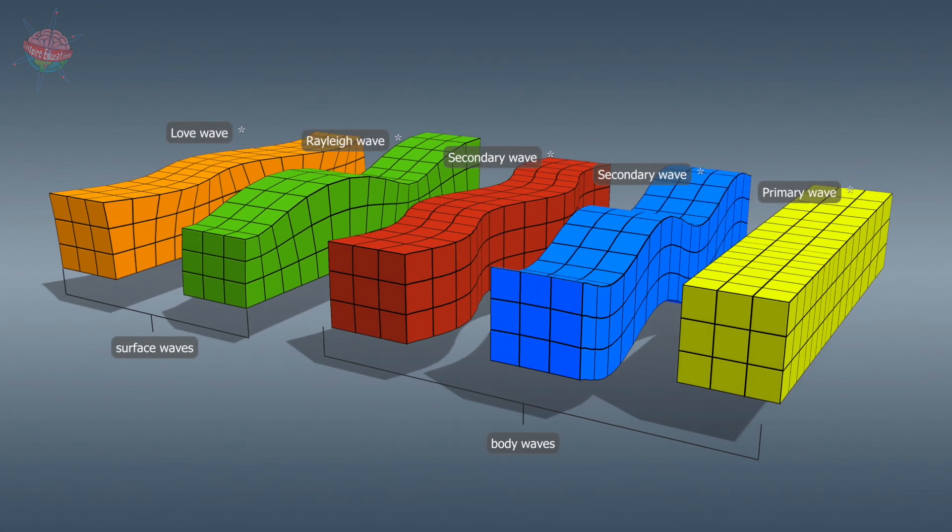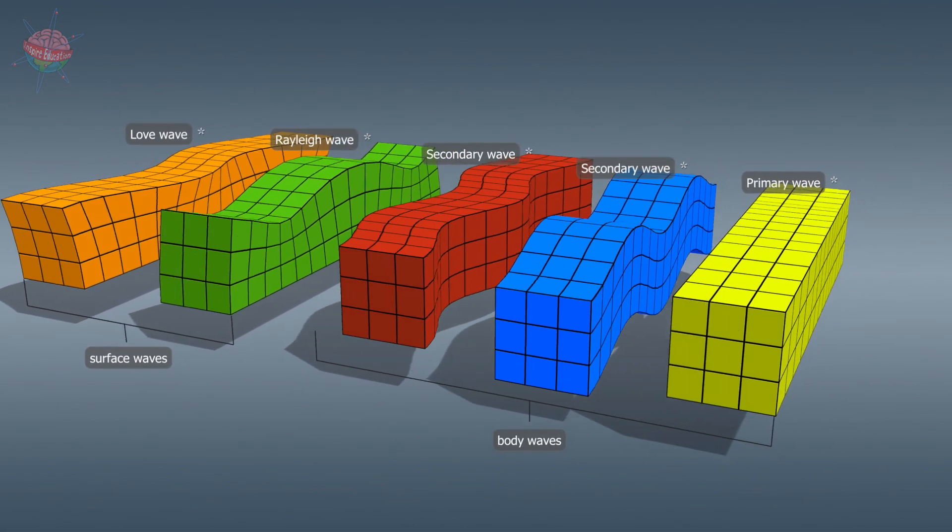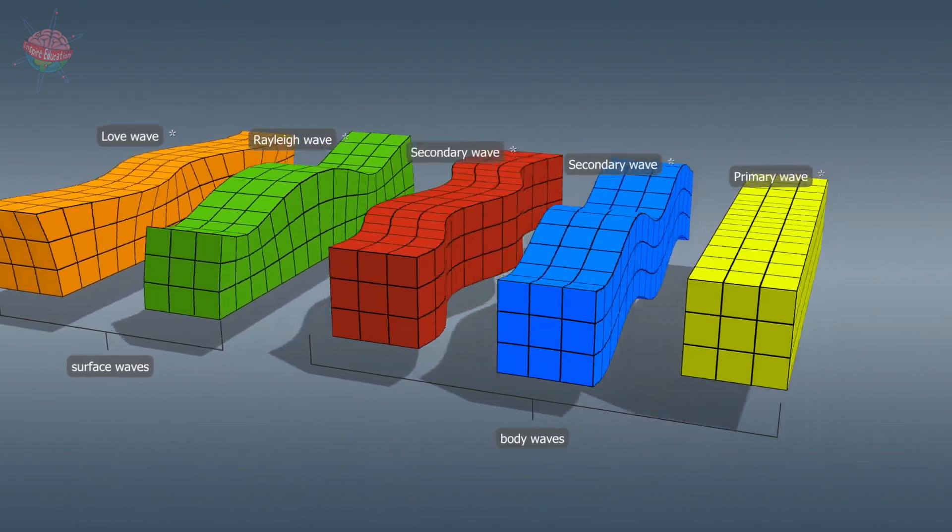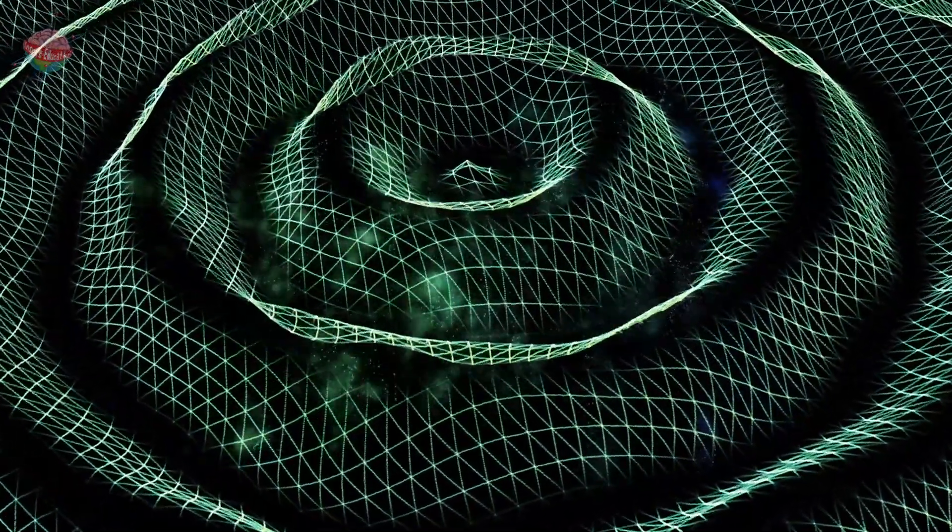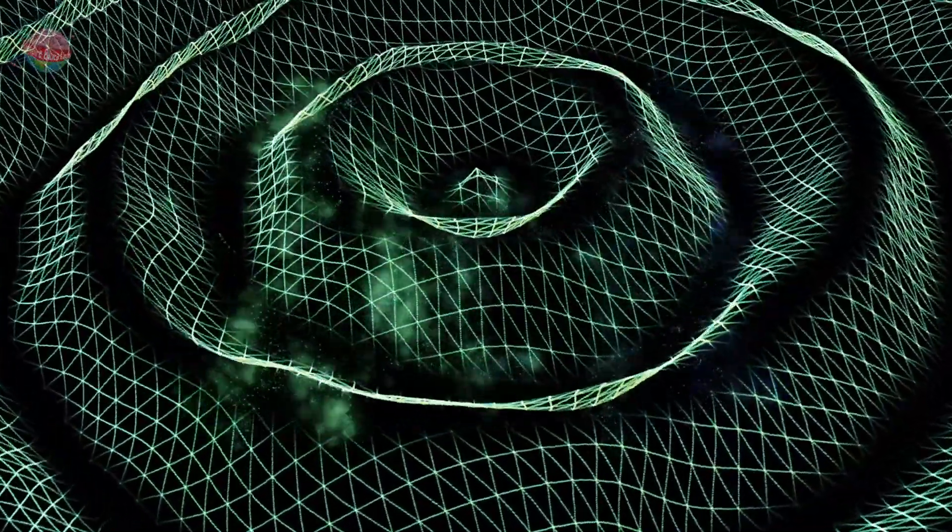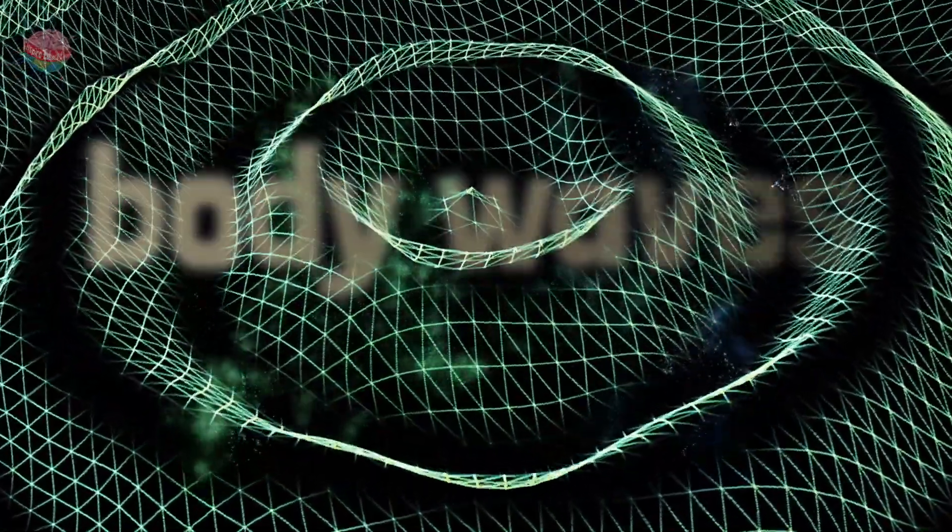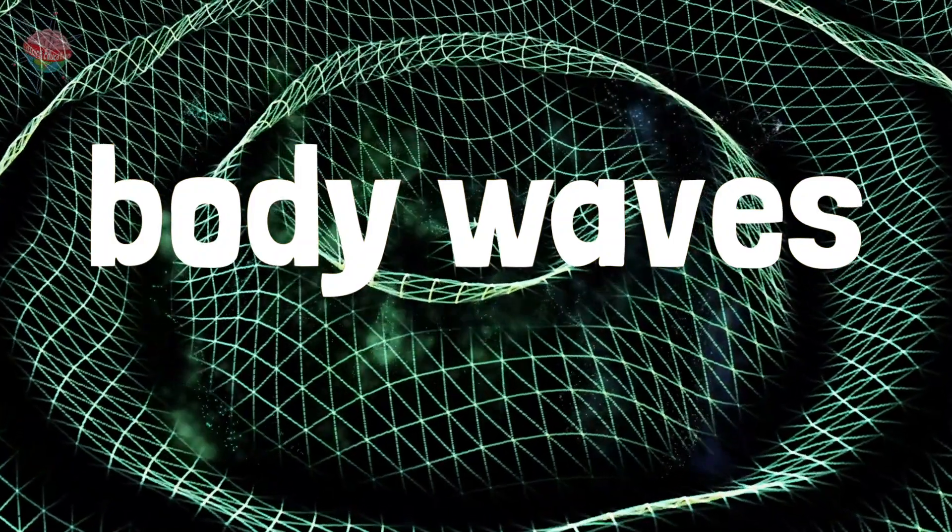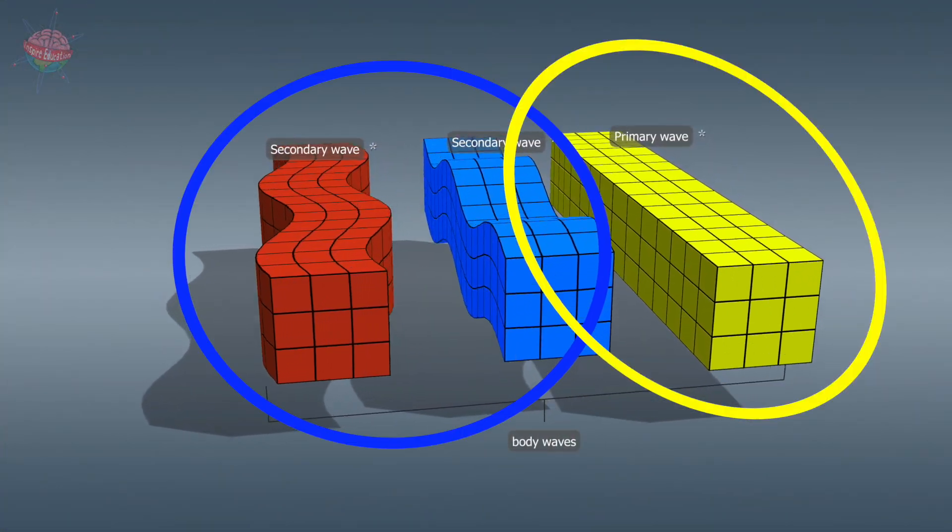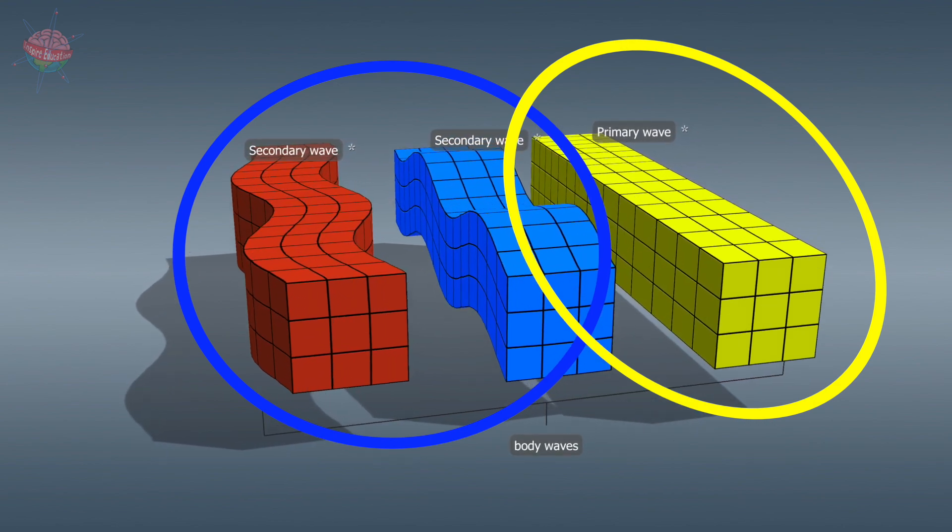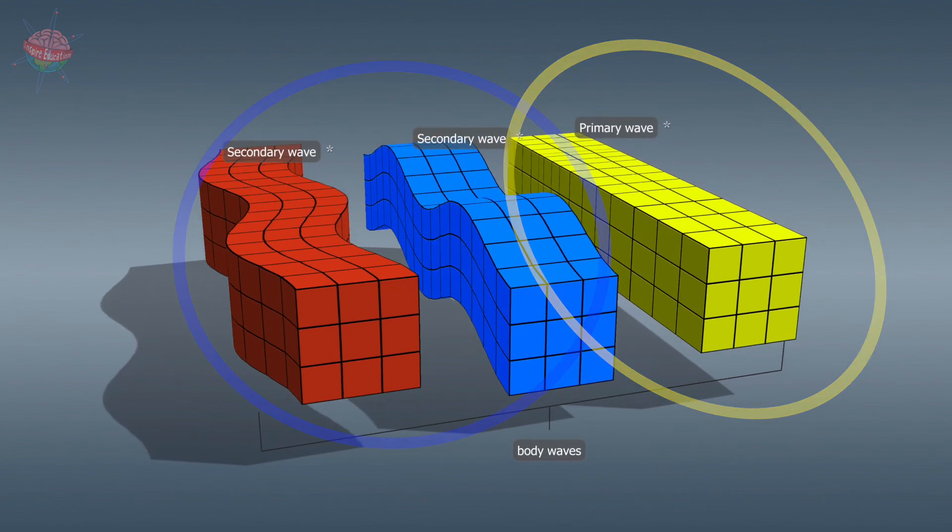The energy released in the focus or hypocenter spreads in the form of waves. These waves travel through the interior of the Earth and spread out in all directions. They are called body waves. There are two types of body waves, longitudinal and transverse waves. Their names derive from the direction in which the particles move.